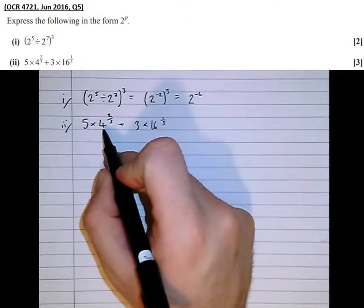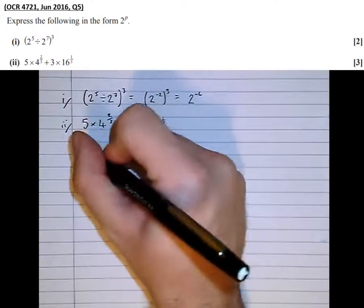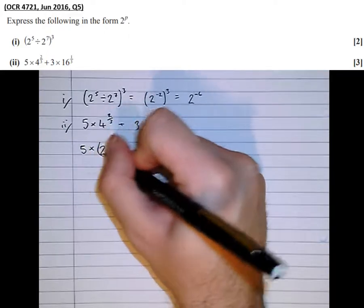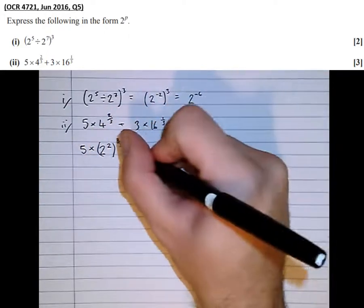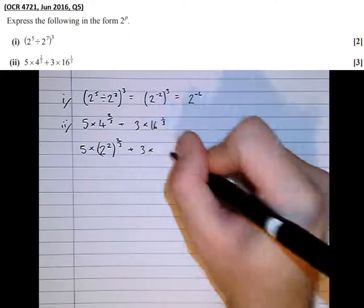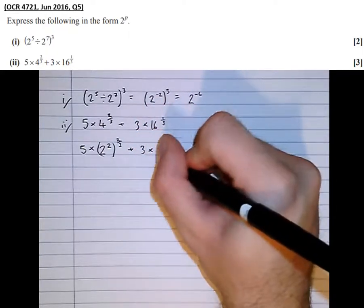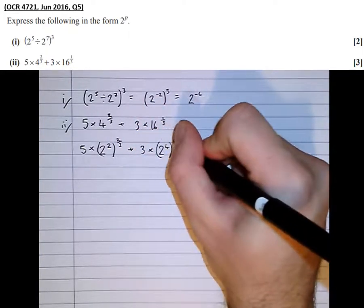Well first of all, this one's relatively straightforward to write as a power of 2. We've got 5 times 2 squared, 4 is 2 squared, to the power of 2 thirds, plus 3 times, and 16 is 2 to the power of 4, to the power of 1 third.